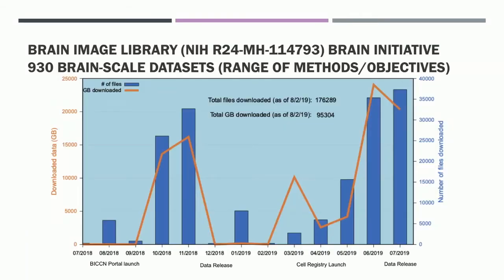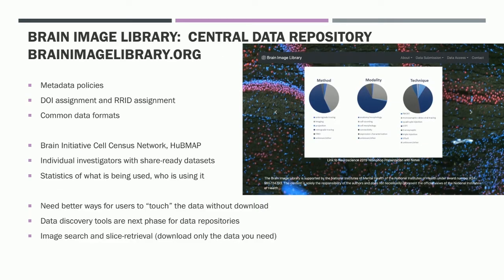We need to be able to discover data within these larger datasets. With support of the Brain Initiative, we have a Brain Image Library with almost a thousand brain-scale datasets — all confocal microscopy datasets from a variety of investigators and NIH-funded data collection initiatives. We have metadata policies, DOI assignment, RRID assignment, and common data formats. Data is pre-processed and converted into JPEG 2000 format so all the data can be accessed the same way. We need better ways for users to touch the data without downloading the whole dataset.